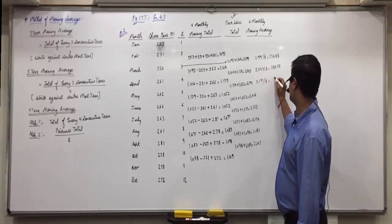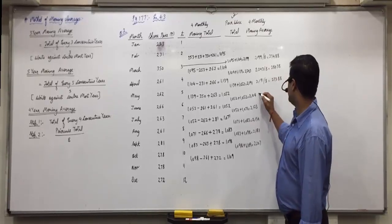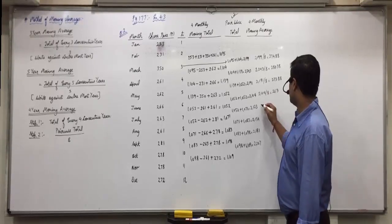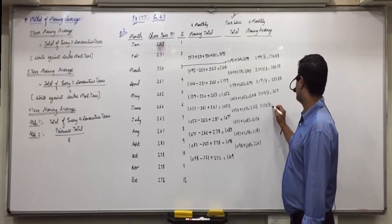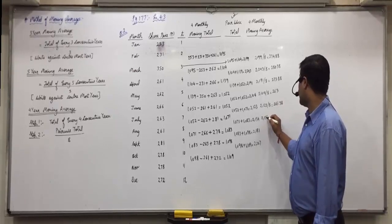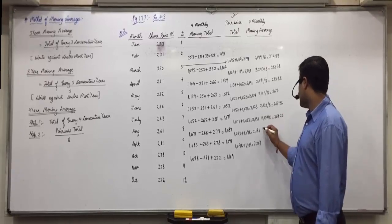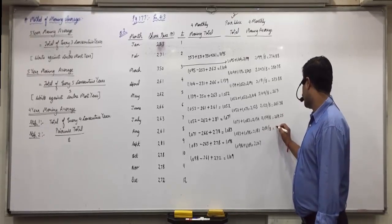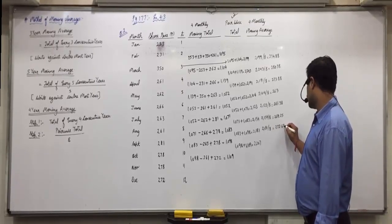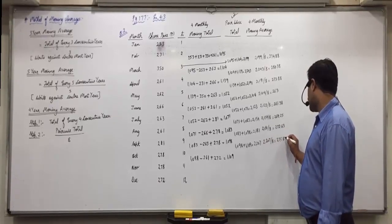Then 2191 divided by 8 equals 273.8. Then 2104 divided by 8 equals 263.0. Then 2123 divided by 8 equals 265.375. Then 2154 divided by 8 equals 269.25. Then 2181 divided by 8 equals 272.6. Then 2207 divided by 8 equals 275.875. Everyone clear with this?